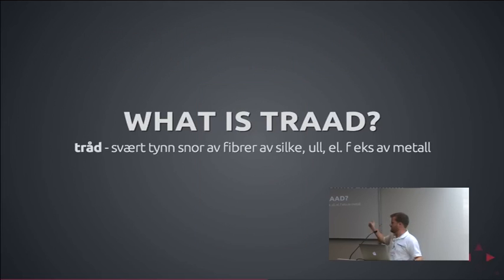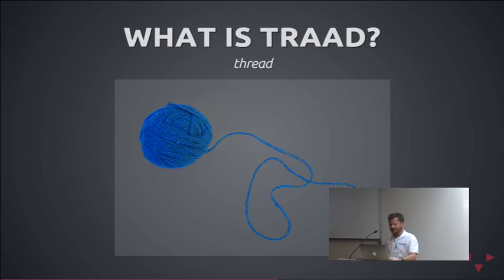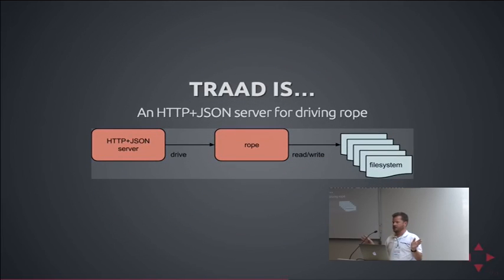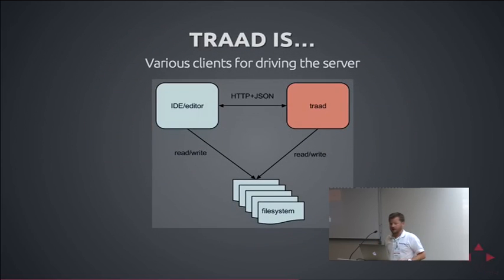Trod is Norwegian for 'thread' — rope, thread, you get it. Pro tip: if you need names for your projects, learn a foreign language and use that word. What is Trod? Trod is an HTTP JSON server wrapped around Rope — all it does is put an HTTP API on top of Rope so you can call it easily. It also includes various clients for driving the server; right now it has one, for Emacs. The idea is that your IDE — Vim, Emacs, Visual Studio, whatever — can send HTTP JSON requests to Trod, and it will work on the file system and do the work for you.